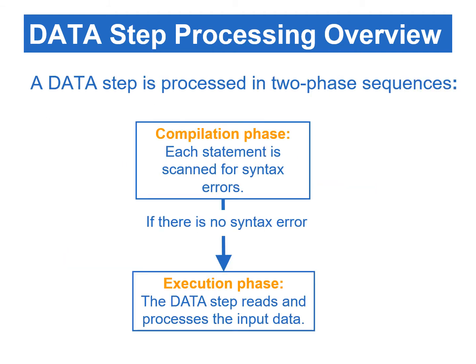A data step is processed sequentially via the compilation and execution phases. In the compilation phase, each statement is scanned for syntax errors. If an error is found, SAS will stop processing. The execution phase only begins after the compilation phase ends. In the execution phase, the data step works like a loop, repetitively executing statements to read data values and create observations one at a time.